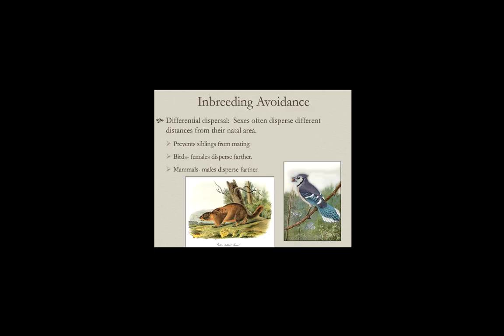In animals, we often also see sex-specific dispersal at different distances from where they were raised, which prevents siblings from mating with each other. In birds, males tend to stay much closer to the area where they hatched, while females disperse much farther — reducing the chance that brothers and sisters will meet when sexually mature. Mammals have a similar pattern but reversed: males tend to disperse much farther than females. The consequence is the same — siblings are just less likely to meet up as potential mates.